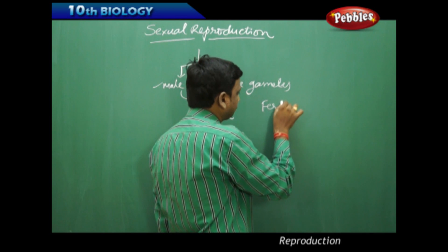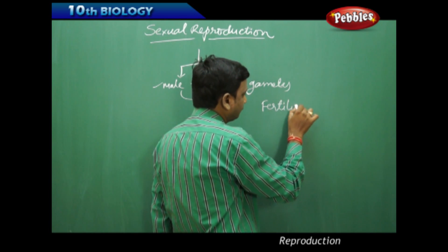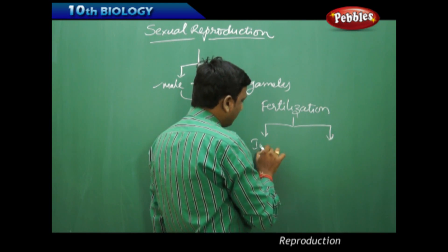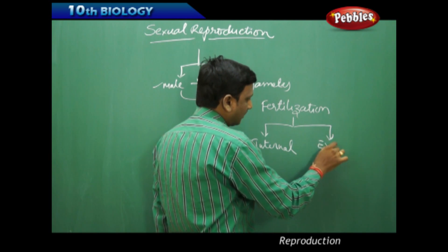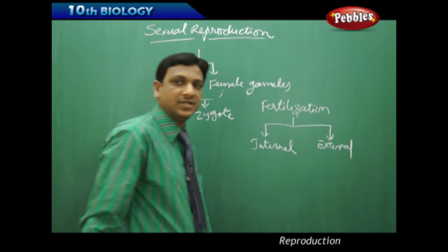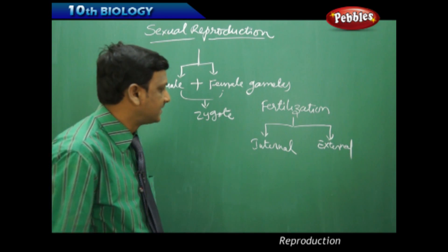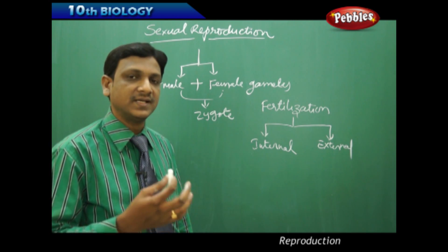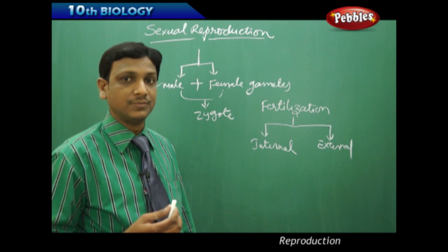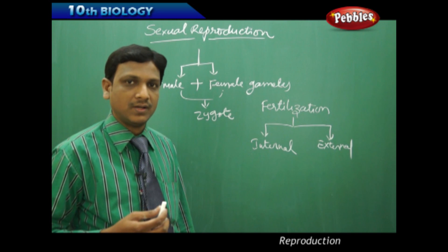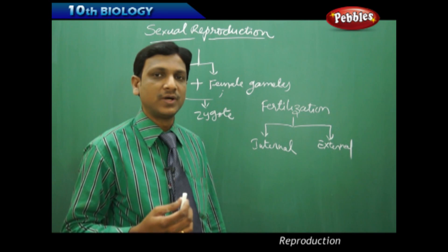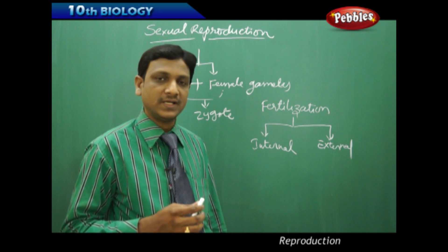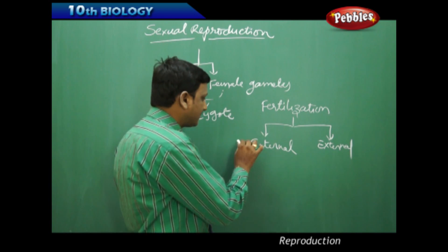Fertilization is of two types: internal fertilization and external fertilization. If the fusion of the gametes takes place inside the body of the female organism, we call it internal fertilization. The male gametes are introduced into the female body, female gametes are produced in the female body, and these two gametes fuse inside the female body.